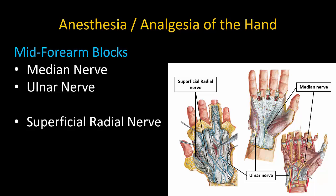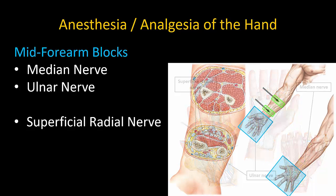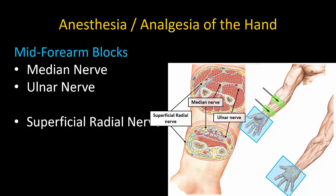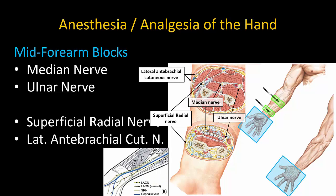Surgical anesthesia or analgesia of the hand may be provided by mid forearm blocks of the median nerve, ulnar nerve, and superficial radial nerve. These nerves are generally simple to locate and identify on ultrasound. They have predictable relationships to muscles and vessels in the forearm and are readily visualized. Blockade of the lateral antebrachial cutaneous nerve is also recommended as it often innervates the first dorsal web space.